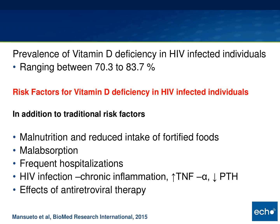Looking at the prevalence of vitamin D in HIV-infected individuals, the range from several small to moderate studies could be as much as 70 to 83 percent. There are several risk factors for vitamin D deficiency in HIV-infected individuals in addition to traditional risk factors: older age, obesity, darker skin tone, using sunscreens, and protective clothing—in other words, inadequate sun exposure.